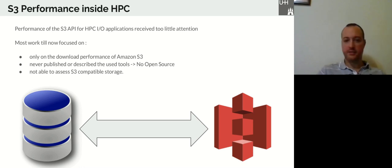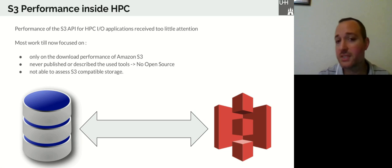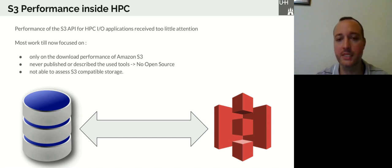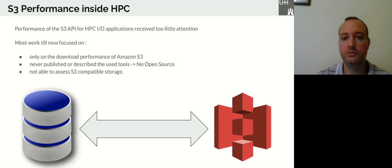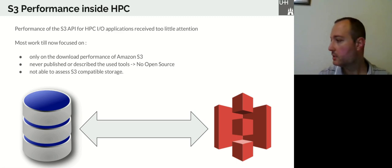Now that we know REST is a viable option for HPC workloads, let's assess the performance of S3 itself. If S3 performance is good enough, this would be a huge milestone towards achieving convergence between HPC and cloud. However, the performance of S3 inside HPC didn't get much attention. Most work done until now only focused on the download performance of S3, which may be relevant for static websites with read-only access. Inside HPC we are operating at another level. Most researchers never published or described their tools, and most found tools are not able to assess S3-compatible storage from providers other than Amazon.